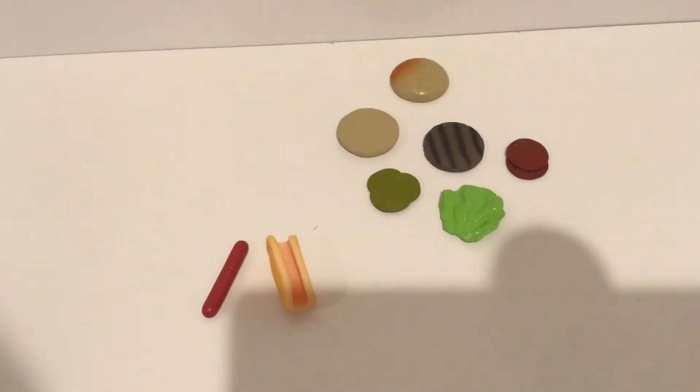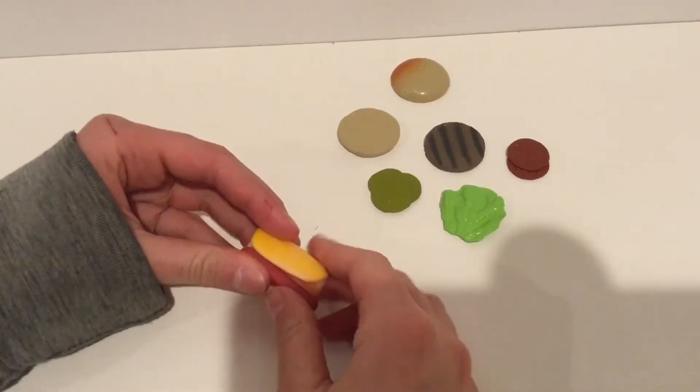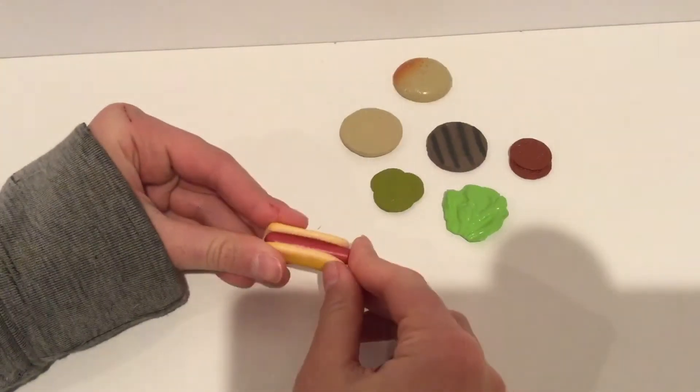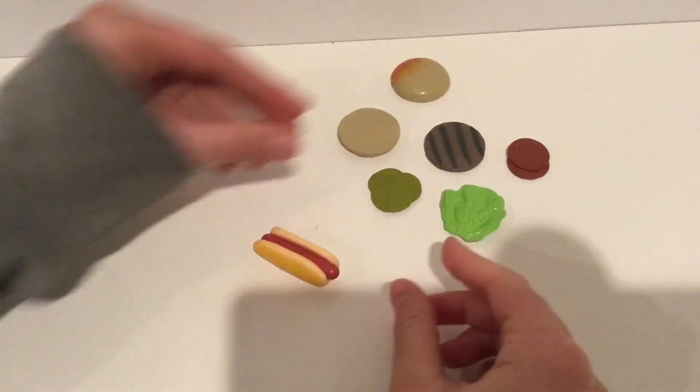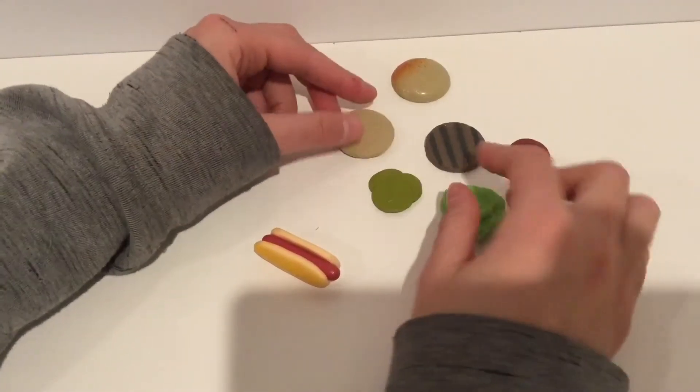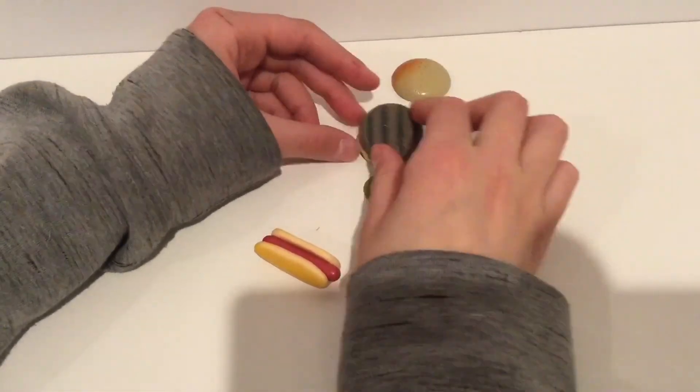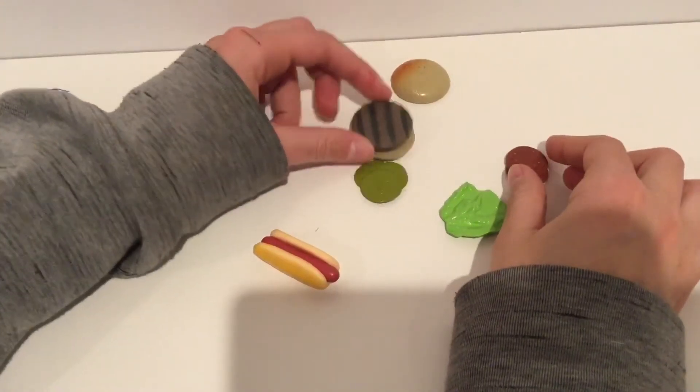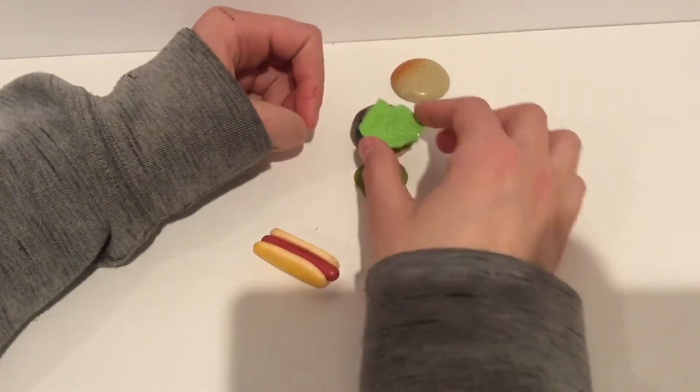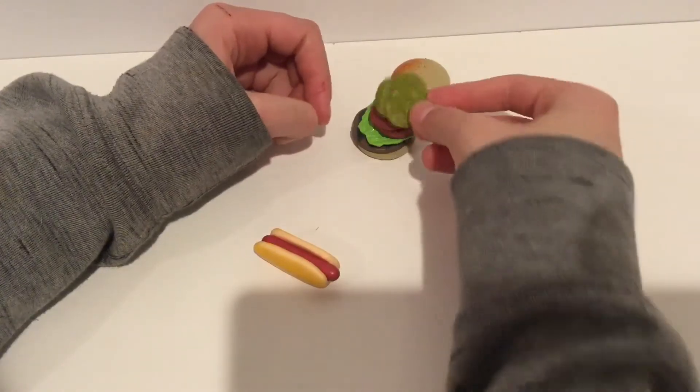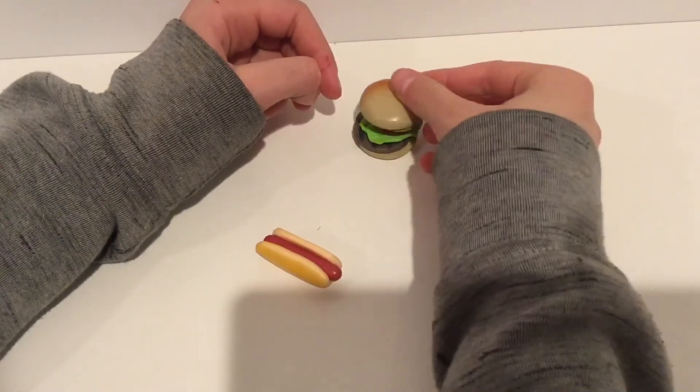Okay, next we have the fast food stuff. So there's this hot dog that comes apart into two pieces and then you can put the hot dog back in the bun. And then we have this hamburger, which is so cute how it comes apart. So you have the bun, and then the meat, and then the lettuce, the tomato, and then the pickles. And then the top bun goes on top.